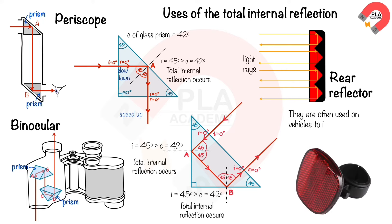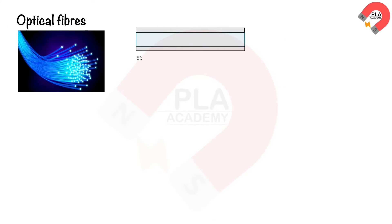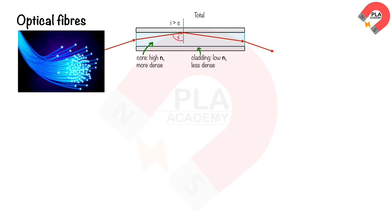Rear reflectors use total internal reflection to reflect light back to the source and are often used on vehicles to improve their visibility to other road users. An optical fiber is a thin glass cylindrical core coated with a transparent cladding material of lower refractive index. Total internal reflection will occur for all rays of light striking the boundary between the core and cladding at an angle greater than the critical angle.